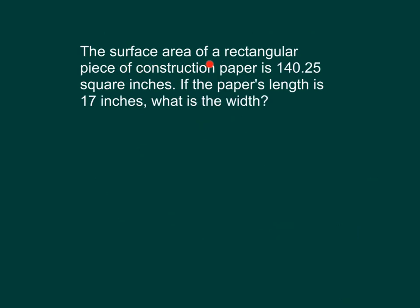The surface area of a rectangular piece of construction paper is 140.25 square inches. If the paper's length is 17 inches, what is its width? What expression would you use to solve this problem? Right, 140.25 divided by 17.